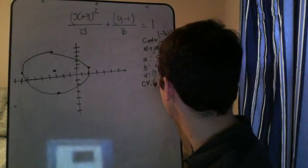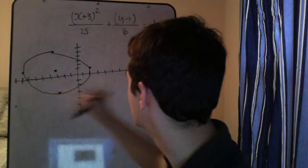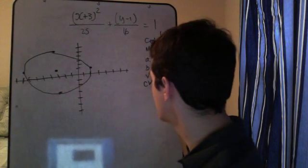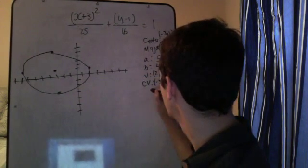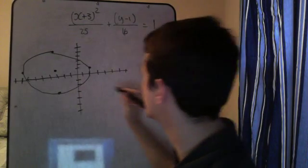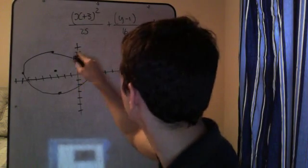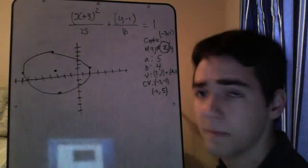And then for the co-vertices, you should have... It should be negative 3, negative 3, and negative 3, comma, let's see, 2, 3, 4, 5. Okay. That's about it.